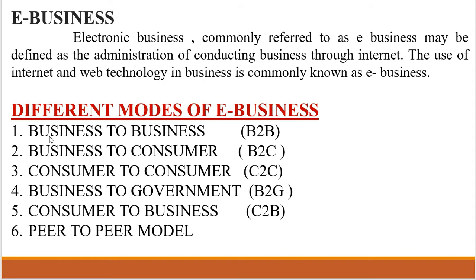First one, business to business, B2B. Business to consumer, B2C. Consumer to consumer, C2C. Business to government, B2G. Fifth one, consumer to business, C2B. Last one, peer to peer model. These are the important modes of e-business.